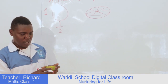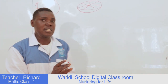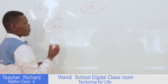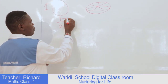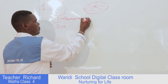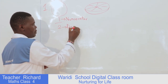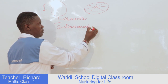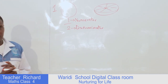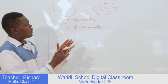A fraction is made up of, or comprises, two parts. There is the top part and there is the bottom part. The top part we call the numerator, and the bottom part we call the denominator. Those are the parts that make up a fraction.